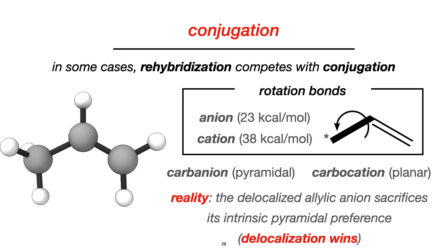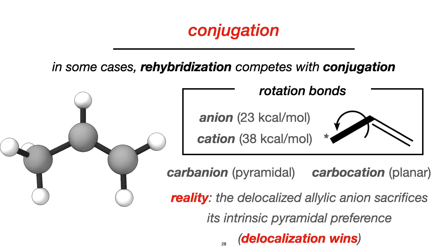Another interesting effect that interplays with hybridization is conjugation. Since these two effects can stabilize the chemical system, they compete. Let us analyze carefully the case of the allylic system. If we rotate the sigma bond, we will have two different barriers depending on whether we are talking about a carbanion or a carbocation. It is easier to rotate in the allylic anion. If we consider the geometry dictated by the hybridization of the carbanion, we have a pyramidal structure, but the delocalized allylic anion sacrifices the preferred pyramidal preference, and the delocalization of the negative charge wins in terms of transition state stabilization.